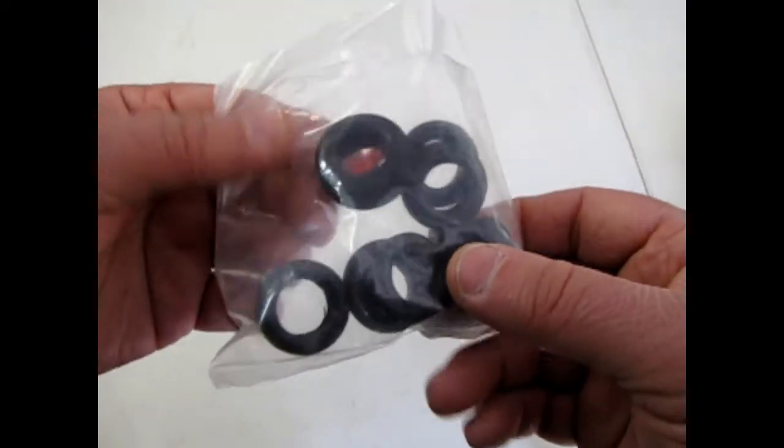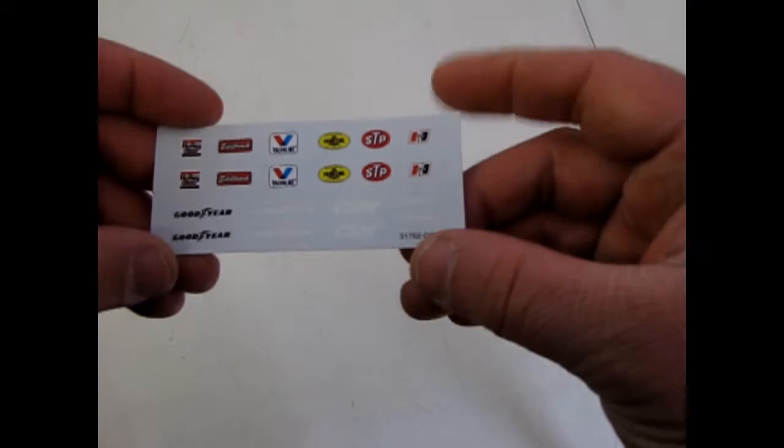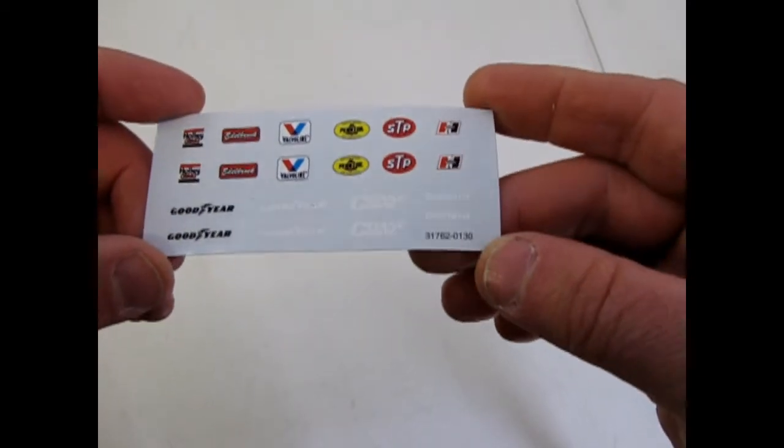Our collection of tires and taillights. The decal sheet which only includes a bunch of sponsor logos, unfortunately.